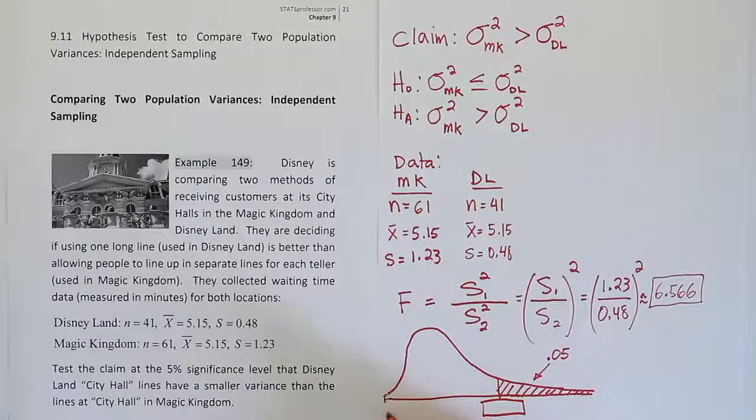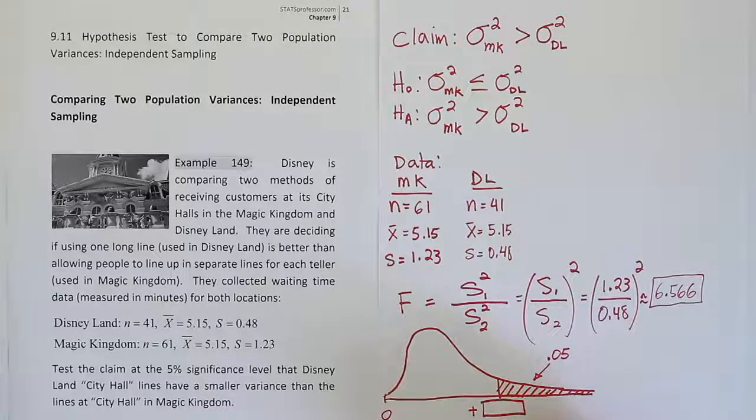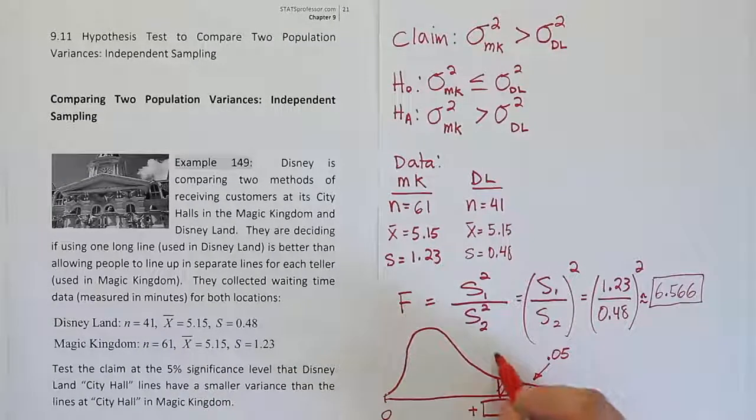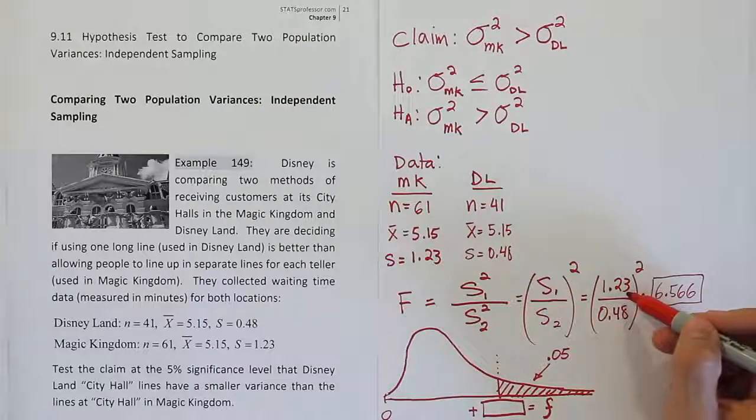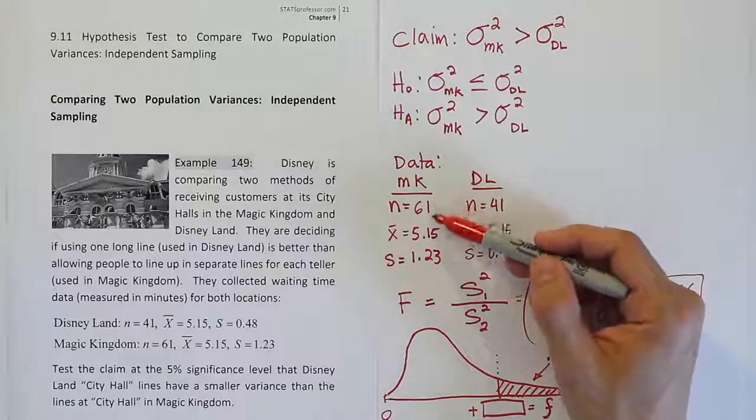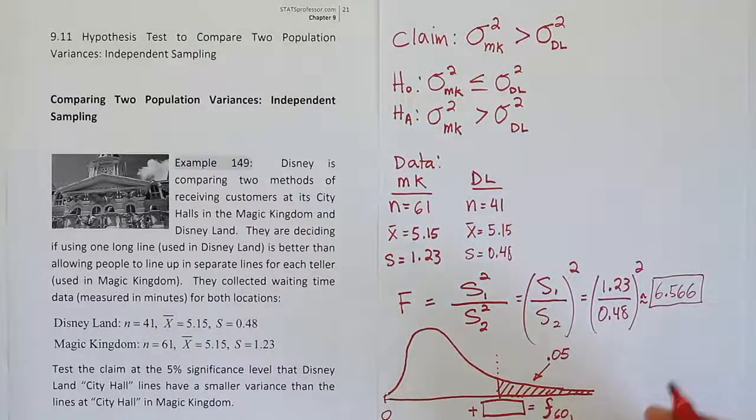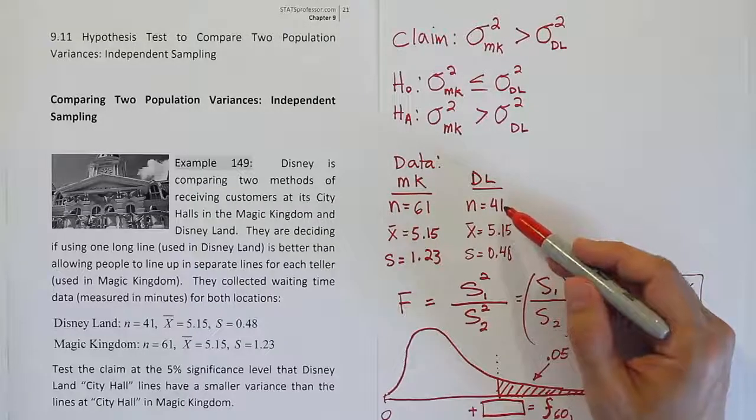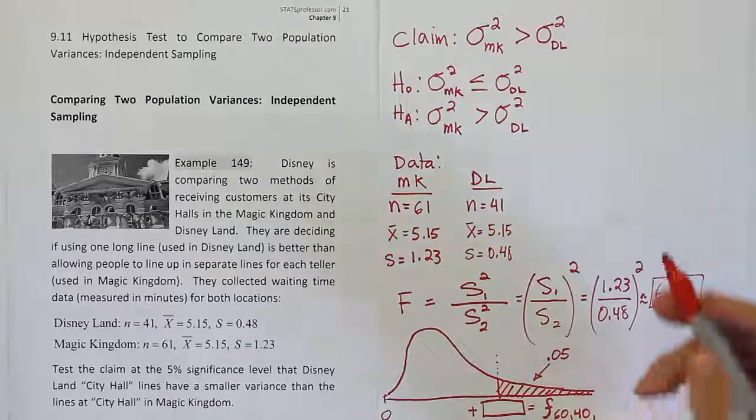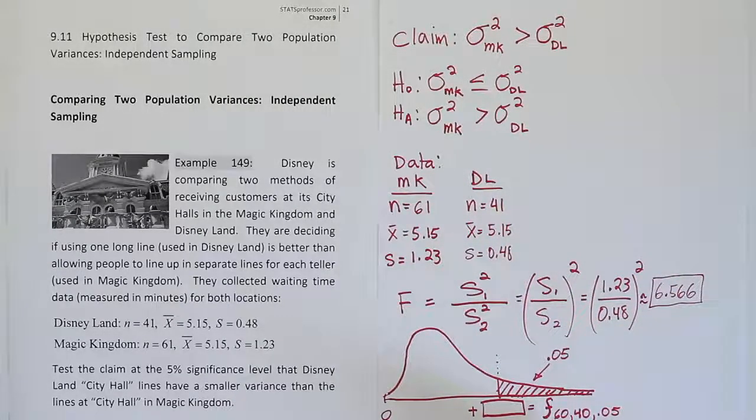From there, we need to put the critical value right here to figure out where that rejection region begins. The start of the F curve is at zero, so this is going to be a positive number and we'll get it from the table. To figure that out, we have to go to the table and we're going to look up the F critical value. The notation is F with a pair of degrees of freedom: numerator degrees of freedom and denominator degrees of freedom. The first group gives us 61-1=60 degrees of freedom. The denominator degrees of freedom from the second group is 41-1=40. Then the alpha is 0.05. So I need to go to my table and look up 60, 40, and 0.05.